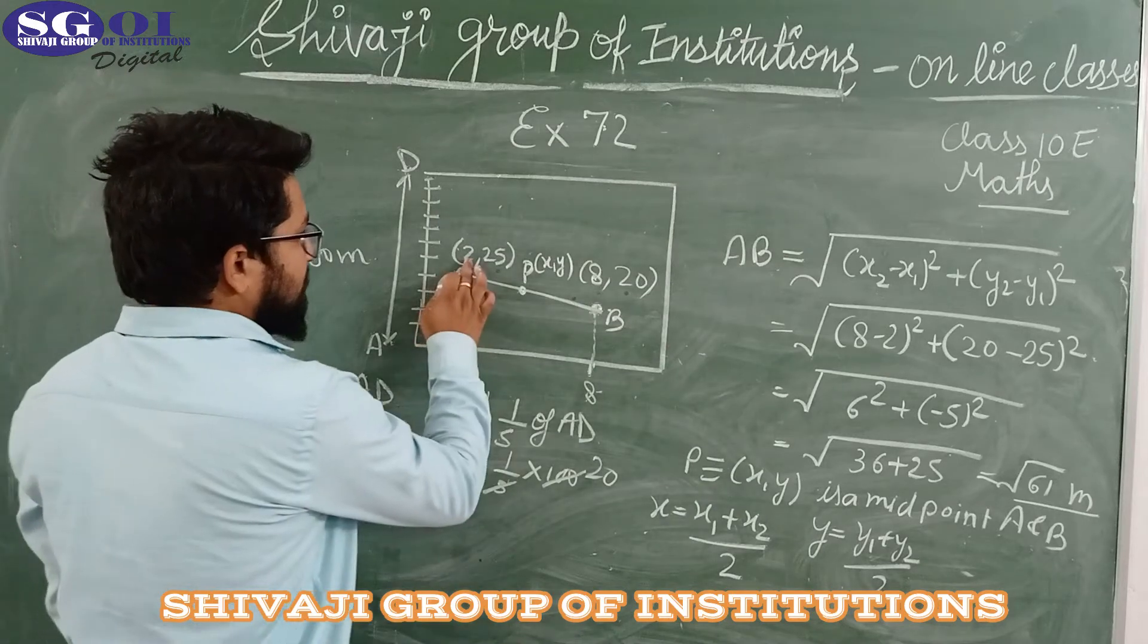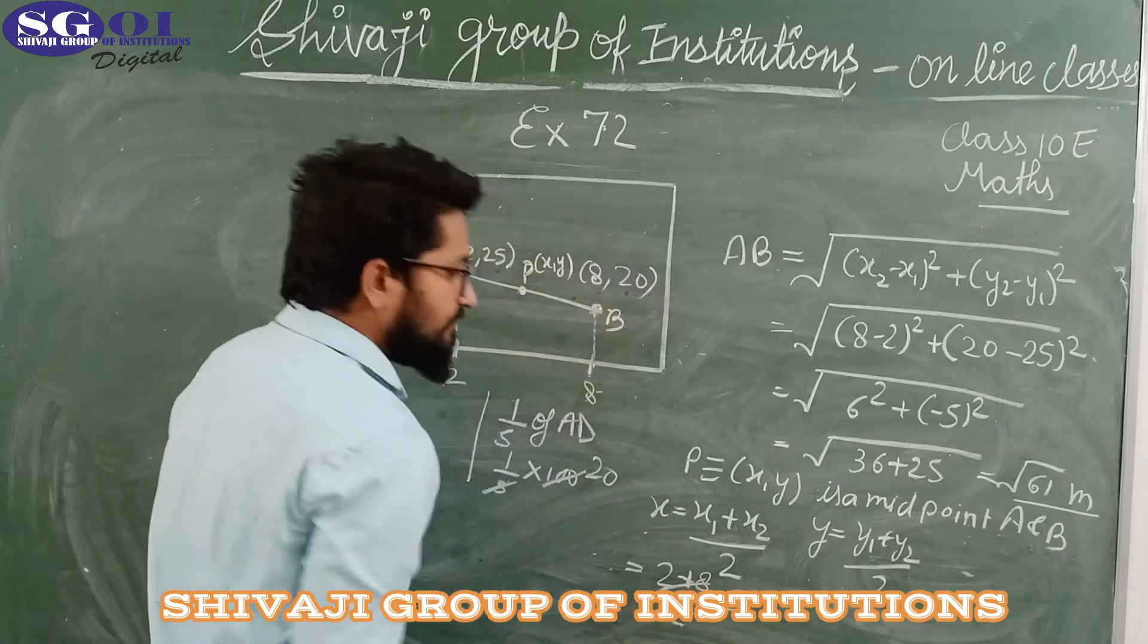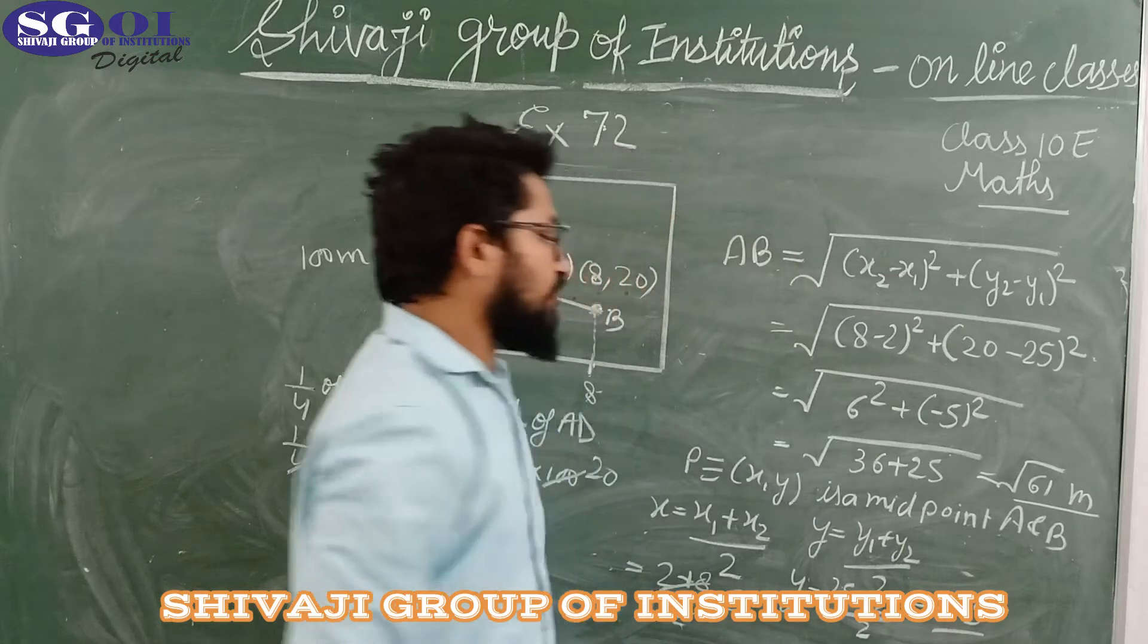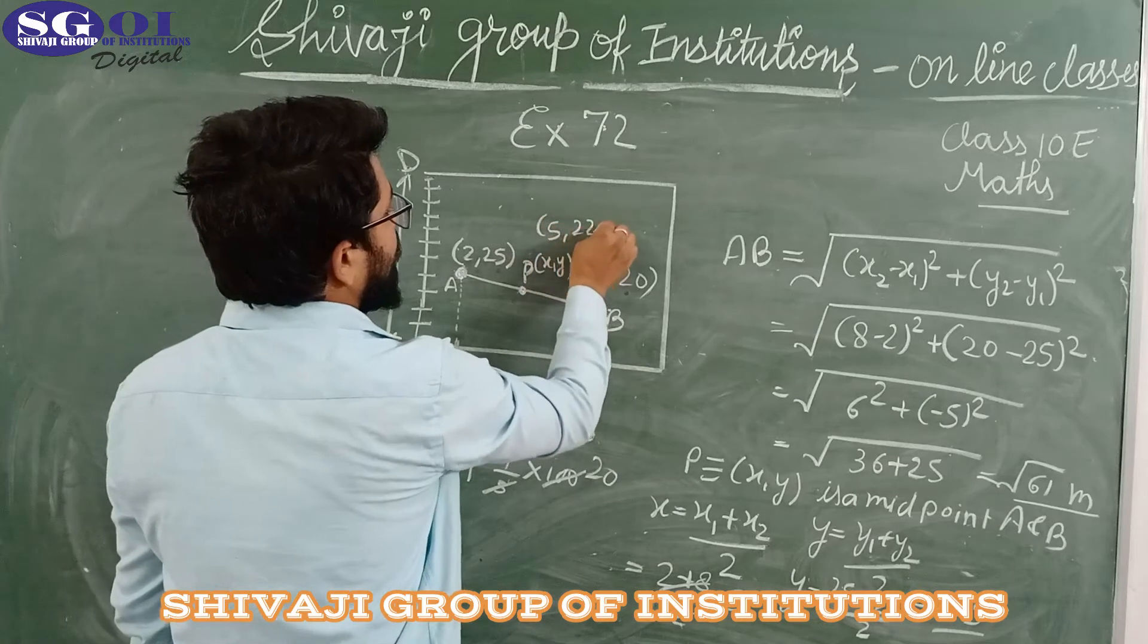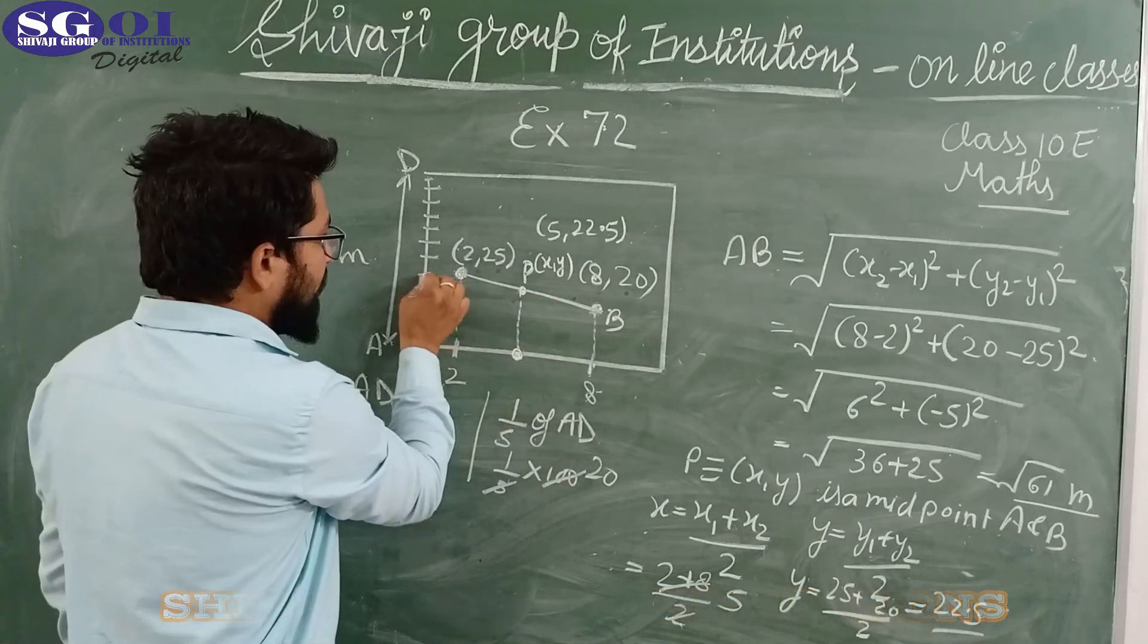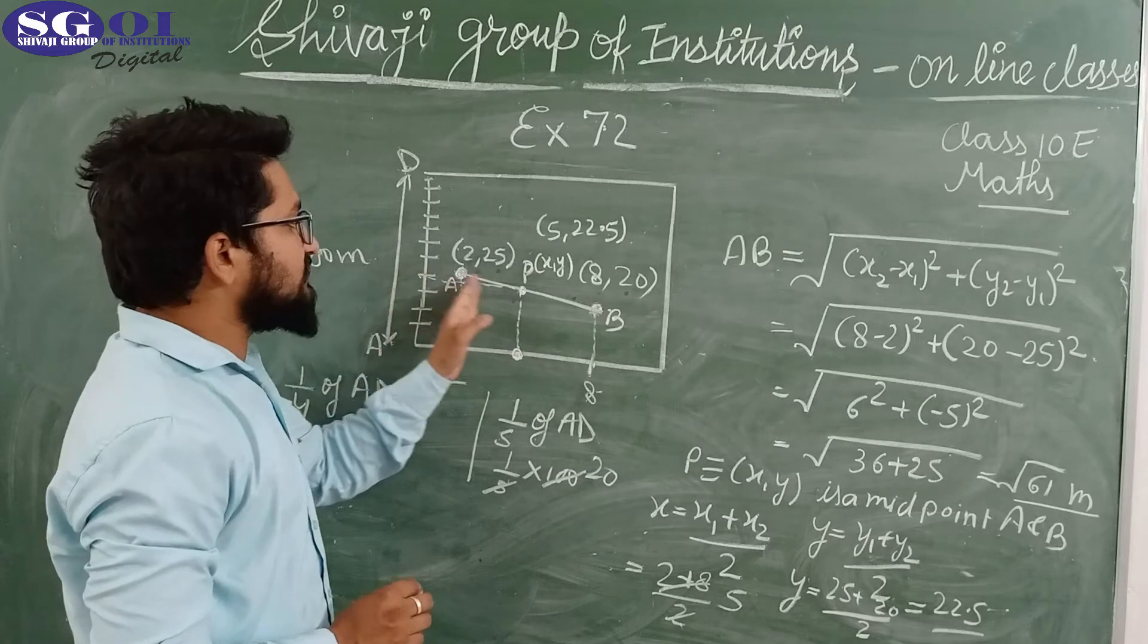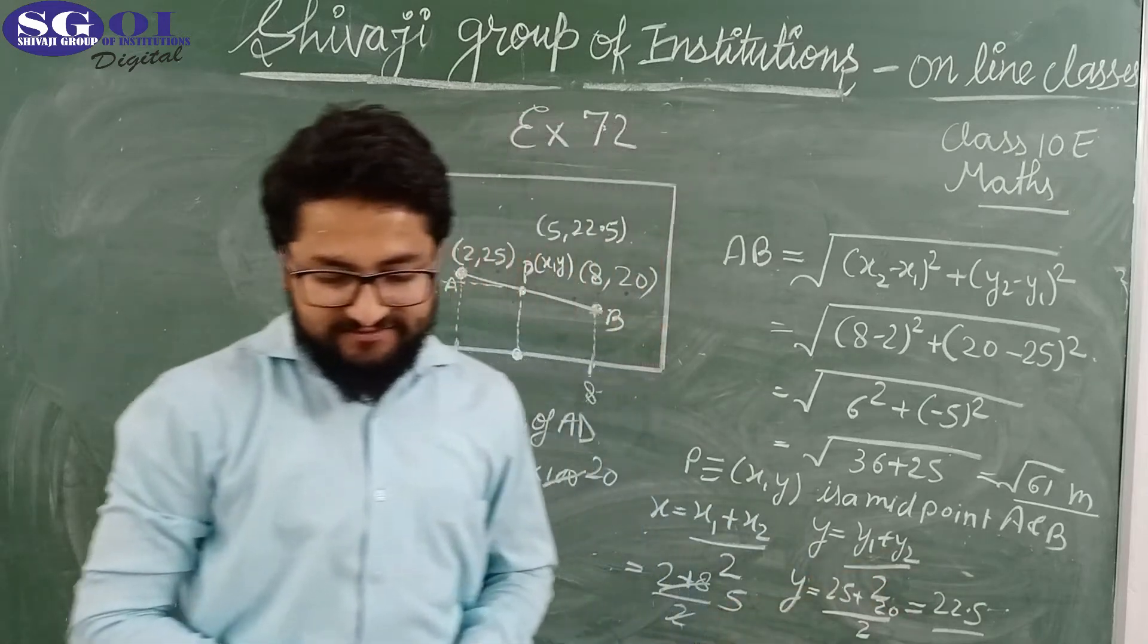Substituting values: x1 is 2 and x2 is 8 upon 2, that will give us 5. Similarly, y is equal to y1 is 25 and y2 is 20 upon 2, which gives 22.5. So the coordinates are (5, 22.5). The flag is on the 5th lane at a distance of 22.5 meters.